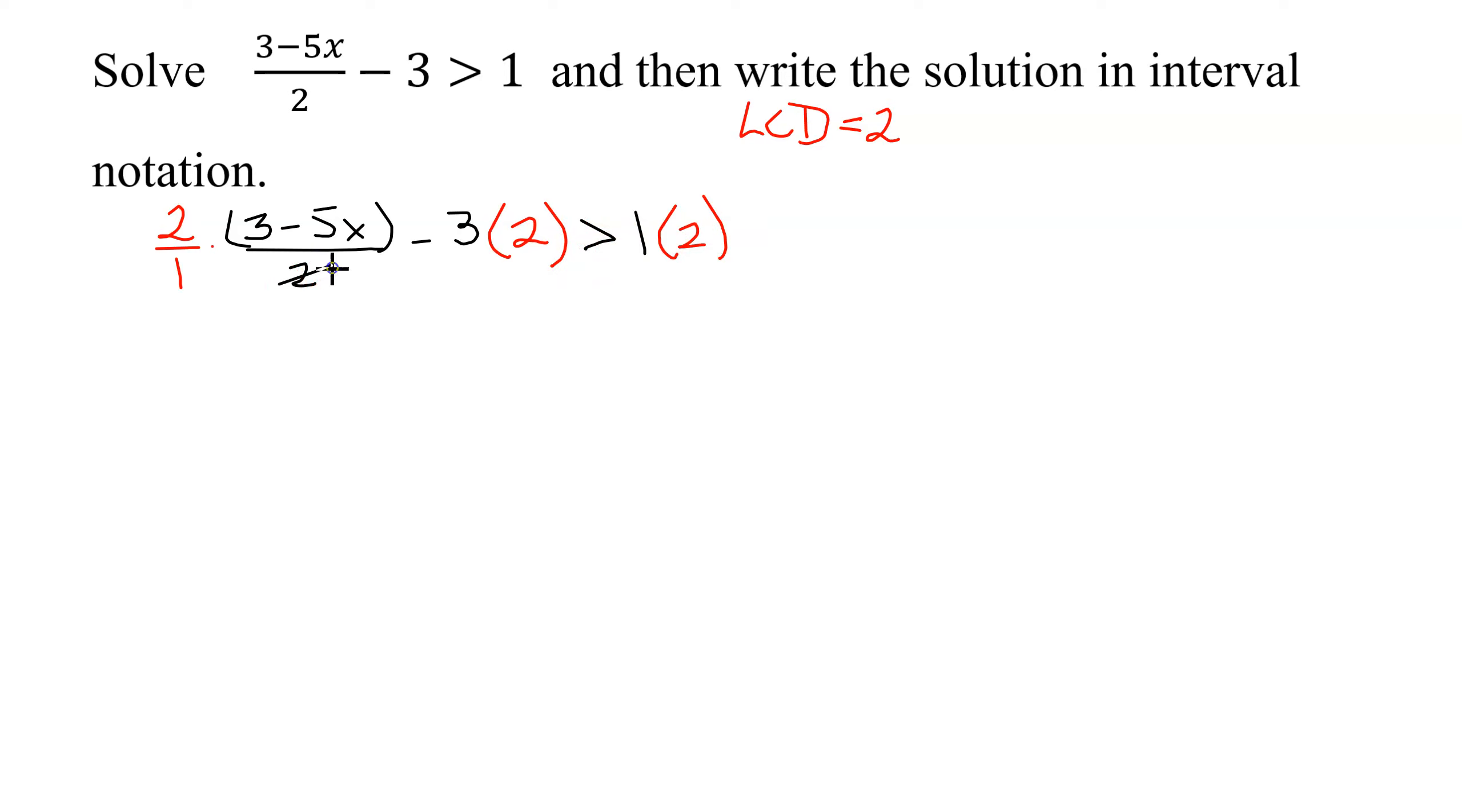So now let's simplify this. The 2s reduce. So I'm going to get 1 times 3 minus 5x over 1. So that's just going to give me 3 minus 5x minus 3 times 2 is 6 is greater than 1 times 2 is 2. So I have like terms on this side so I can combine them. So I have negative 5x.